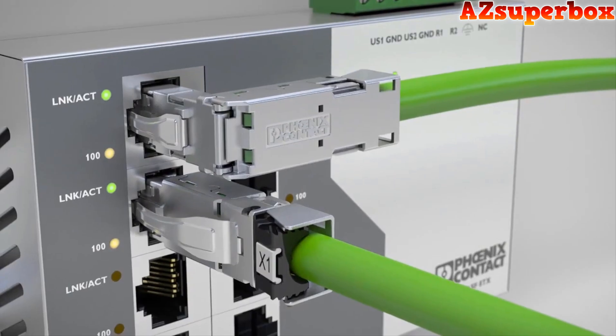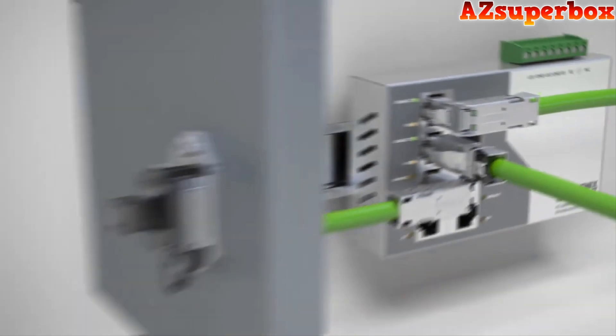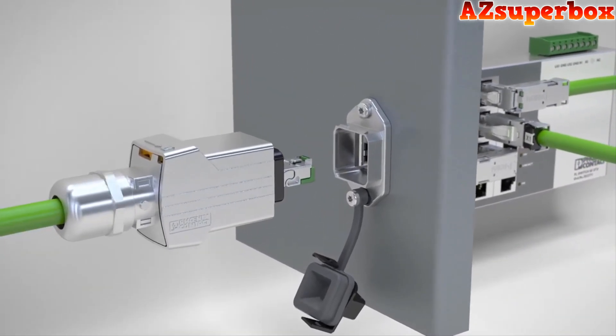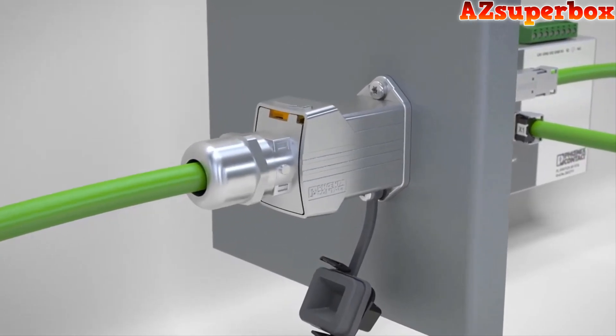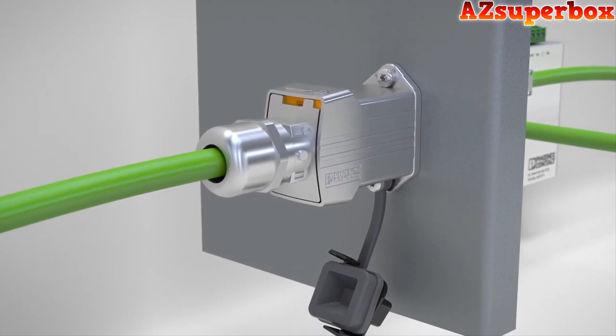Stainless steel pressure springs ensure a secure hold and prevent contact interruptions in the event of vibrations. Beyond the control cabinet, the push-pull housing with IP67 protection ensures secure connections. With the built-in interlocking, unintentional removal of the plug is avoided.